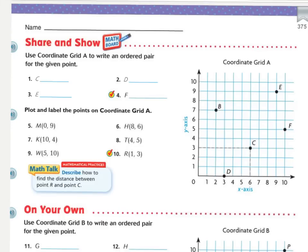Today's share and show, for 1 through 4, you're using coordinate grid A. That's this one right here, to write an ordered pair for the given point. You're going to be writing parenthesis, x coordinate, comma, y coordinate, for these four. And then, for the second part, you are actually going to plot the dots and then label the points with the letters. You're going to be creating other points that look like these, based on the ordered pairs that they give you. Press pause while you write your ordered pairs and plot your points.